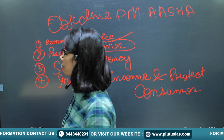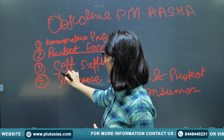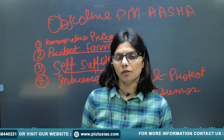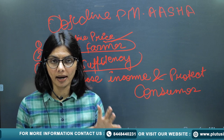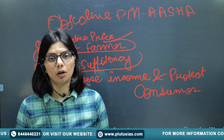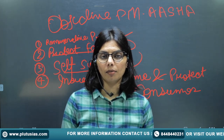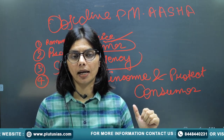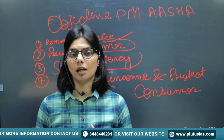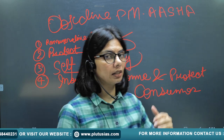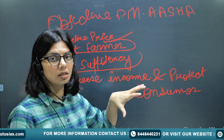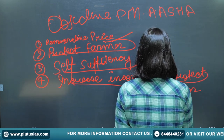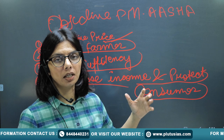The scheme aims to give fair prices and ensure self-sufficiency. Pulse prices are always high, and oilseeds are consumed widely. Due to lack of sufficient production, prices remain high, causing distress to both farmers and consumers. Achieving self-sufficiency will help reduce food inflation, increase farmer income, and protect consumers.